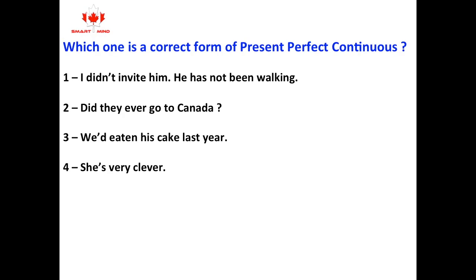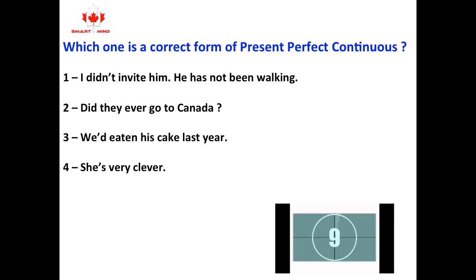Which one is the correct form of present perfect continuous? One, I didn't invite him. He has not been walking. Two, did they ever go to Canada? Three, we'd eaten his cake last year. Four, she's very clever.